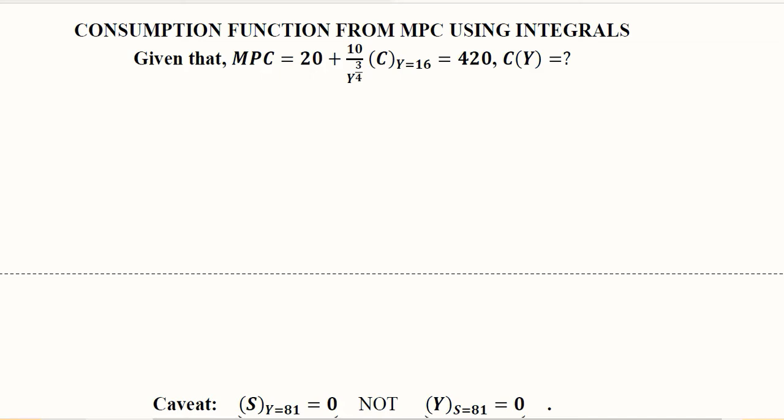In addition to cost and saving functions, we can also convert a consumption function from its marginal version to its total function. For that, we need a marginal consumption function, which is also known as the marginal propensity to consume.